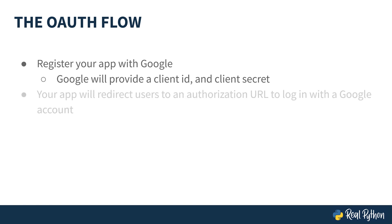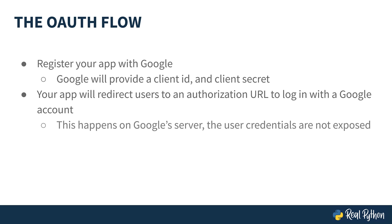When the user tries to log into your app, they will be redirected to an authorization URL to provide their Google account credentials. But this authorization URL lives on Google servers, so your app will never see the user credentials. This way, users can be assured that they are not exposing their password to third-party apps.